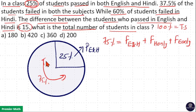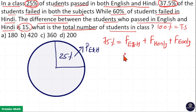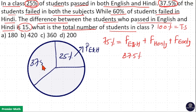The question says 37.5% of students failed in both subjects. So students who failed in both English and Hindi equals 37.5%. Draw this in the diagram — this 37.5% is the students who failed in English and Hindi.